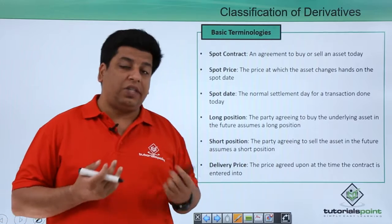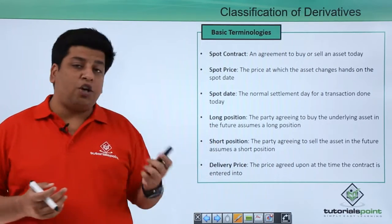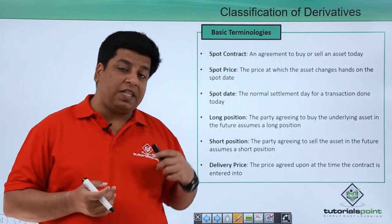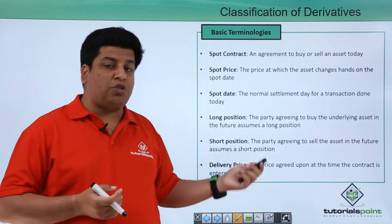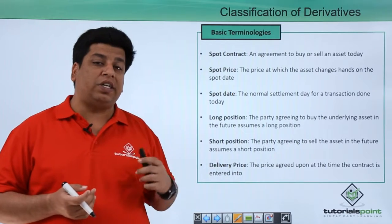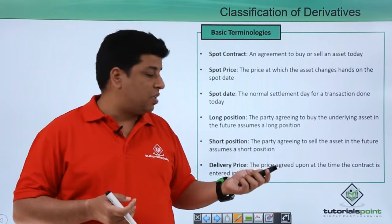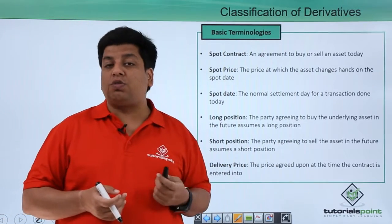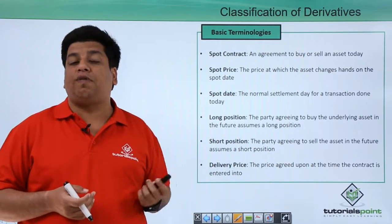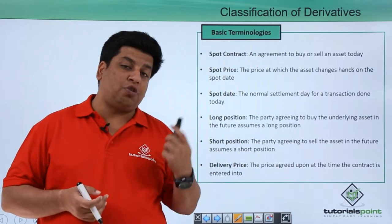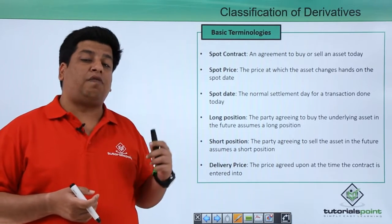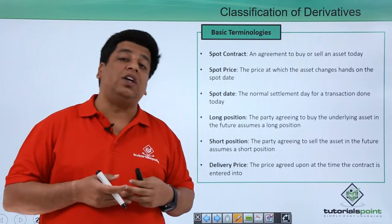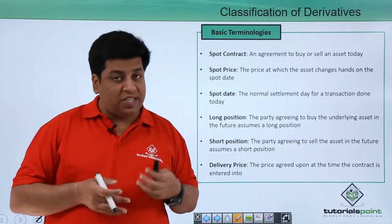Long position: the buyer — the party agreeing to buy the underlying asset — is assumed to have a long position. The party who agrees to sell the asset on an agreed date is assumed to have a short position. Delivery price, also known as strike price in the case of options, is the pre-agreed price at which both parties are going to exchange the underlying assets.